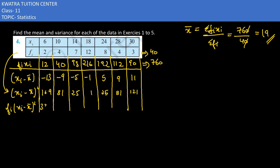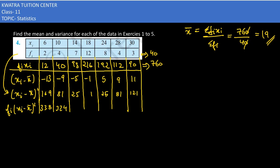So this would give you 338. 4 into 81 will give you 324. Next you have is 175. 12 is there, 8 into 25 is 200.